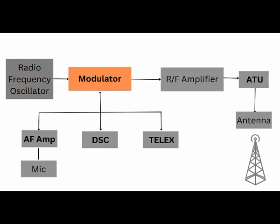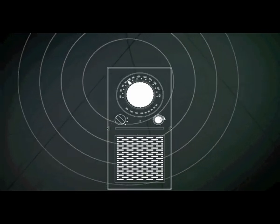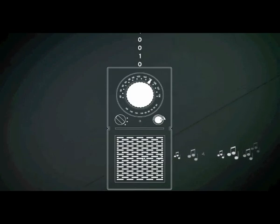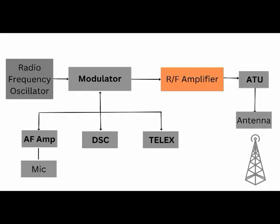The function of the radio frequency oscillator is to create a radio wave with an appropriate frequency and send it into the modulator. You can notice mic, DSC, and telex — these are three modes of communication connected to the modulator. The function of the modulator is to superimpose this information onto the radio wave given by the frequency oscillator. After the modulation process, the information is further amplified — amplification means increasing the power of the radio wave by altering wavelength and frequency to make transmission easier.